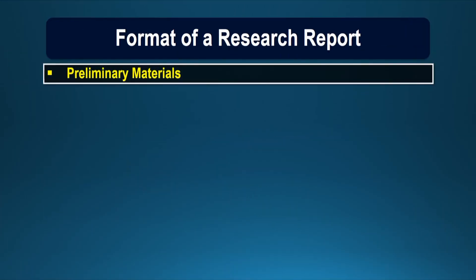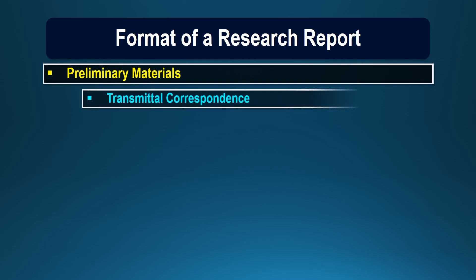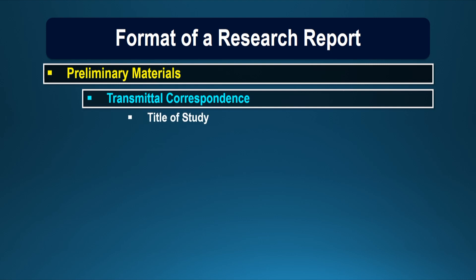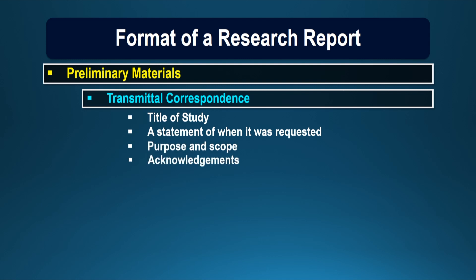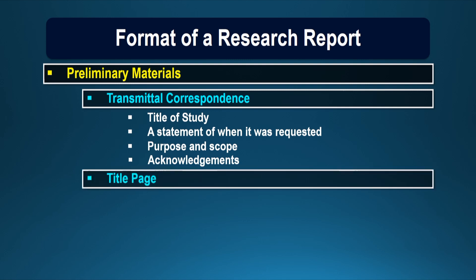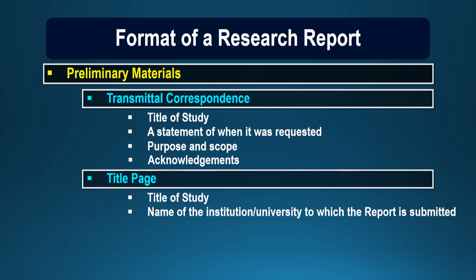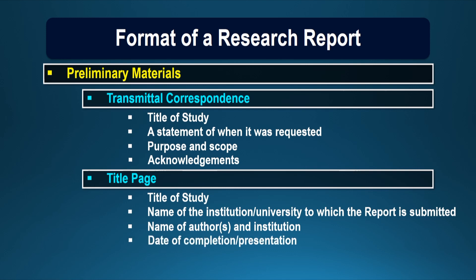Firstly, the preliminary material. Some reports may have one page containing the transmittal correspondence. This page is included in those reports where the study has been carried out on behalf of some external agency. We may have the title of the study on the first page, containing a statement of when it was requested, the purpose and scope, and the acknowledgements. The title page contains the title of the study, the name of the institution or university to which the report is submitted, followed by the name of the author, his identity, the date of completion, and the acknowledgement — through which we thank all those individuals or institutions who provided support during the conduct of the research study.